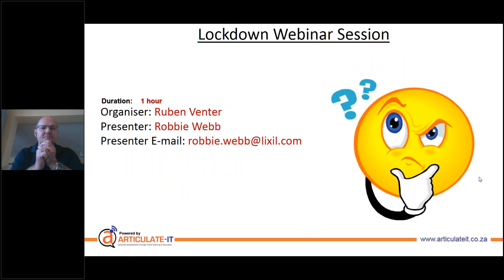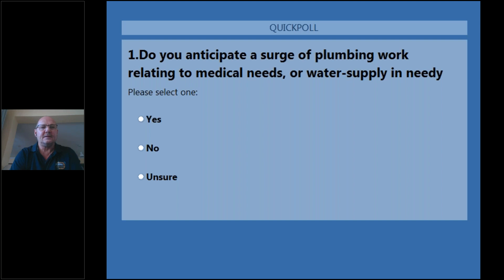Before I hand over to Robbie there are just a few quick polls — three questions to get a bit of audience feedback. It's just a yes/no answer, and if you have any remarks you'd like to communicate to Robbie, his email is on the screen. The first poll question is: do you anticipate a surge of plumbing work relating to medical needs or water supply in needy areas? Just choose yes, no, or unsure.